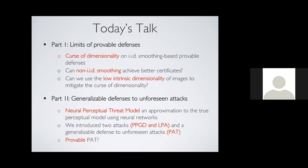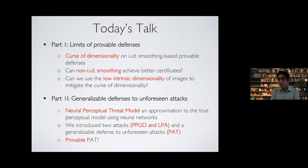A question from an attendee: with the new form of retraining, the clean accuracy drops more compared to training with L-infinity or L-2. A response: we do see a drop in clean accuracy when we have generalization against many other types of attacks, and this may be an intrinsic trade-off that we need to pay in order to gain robustness against 12 different types of attacks. This is something we are also currently studying.